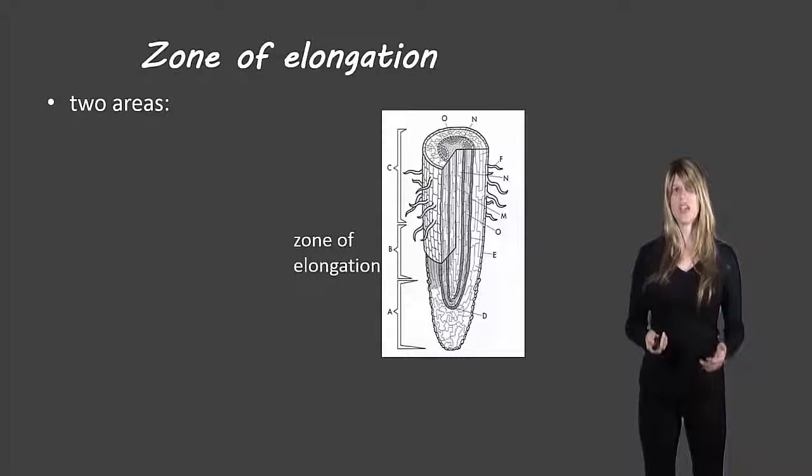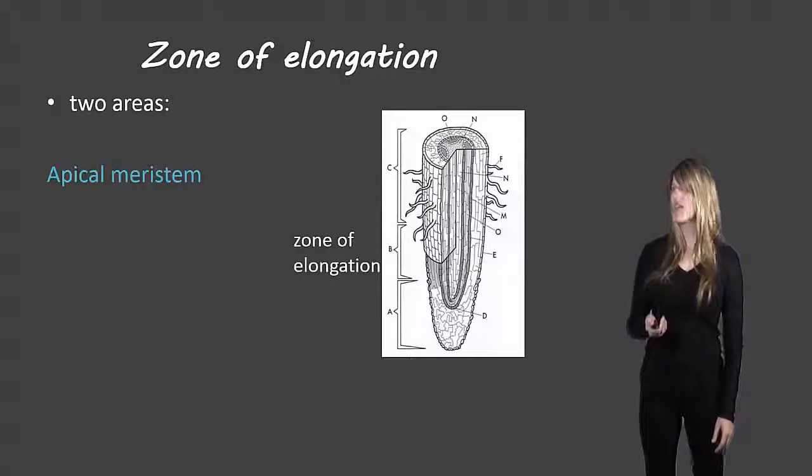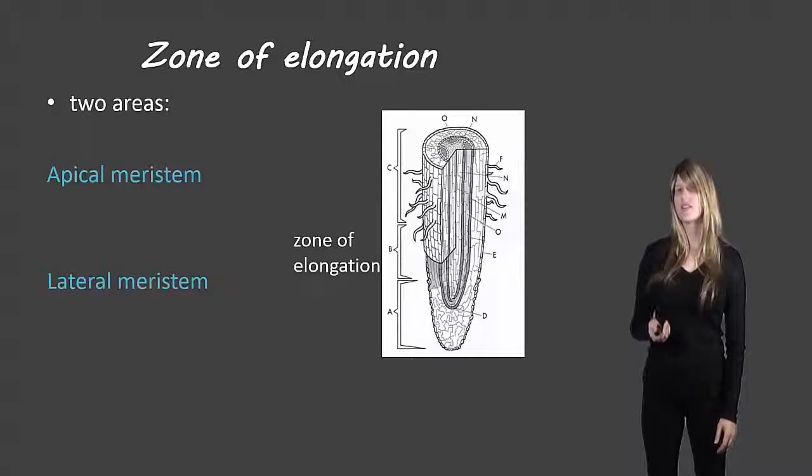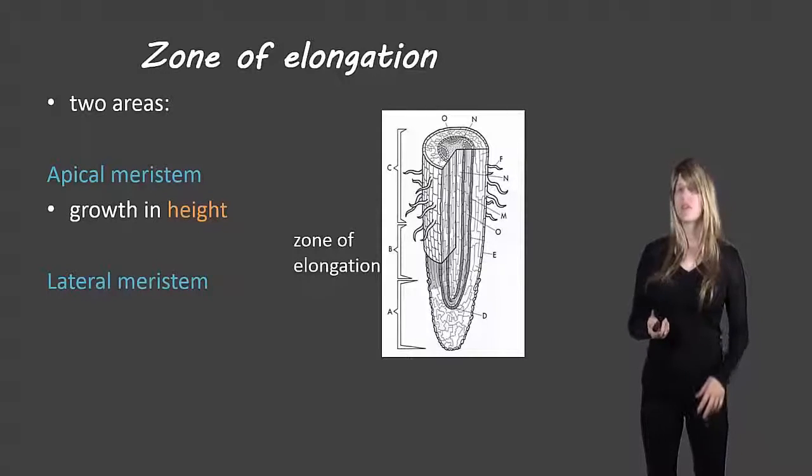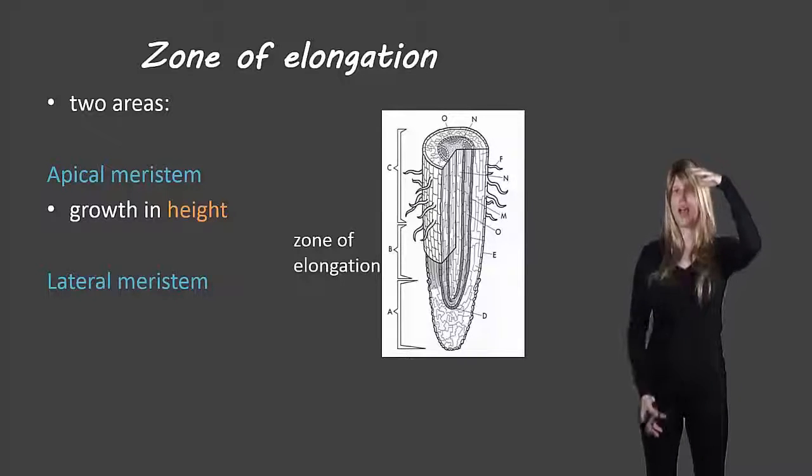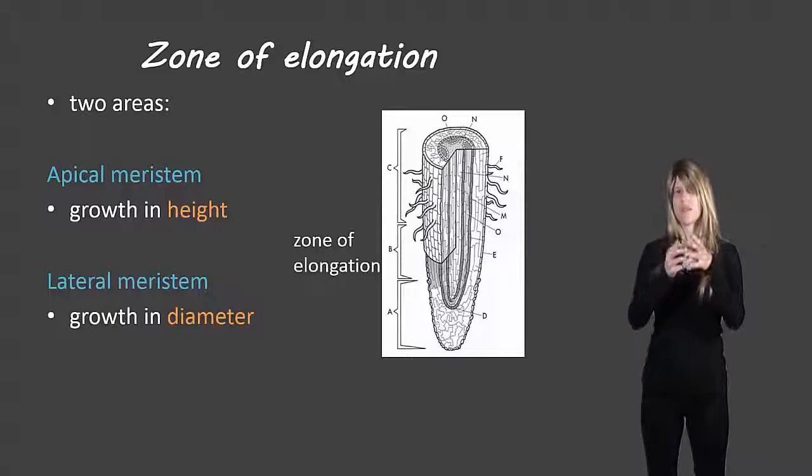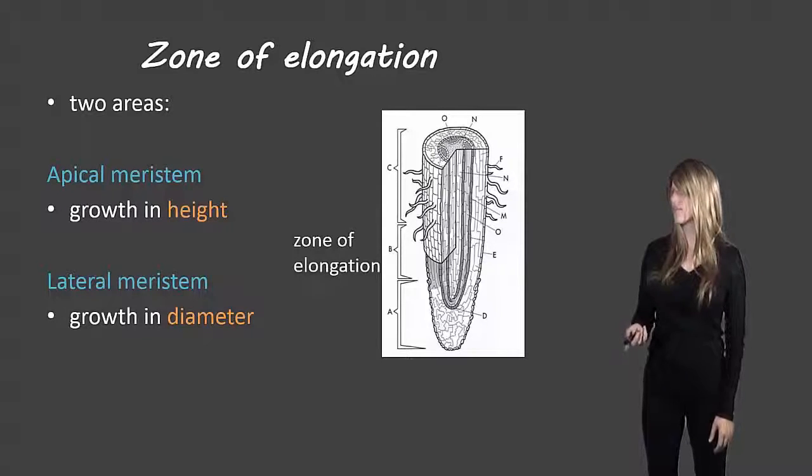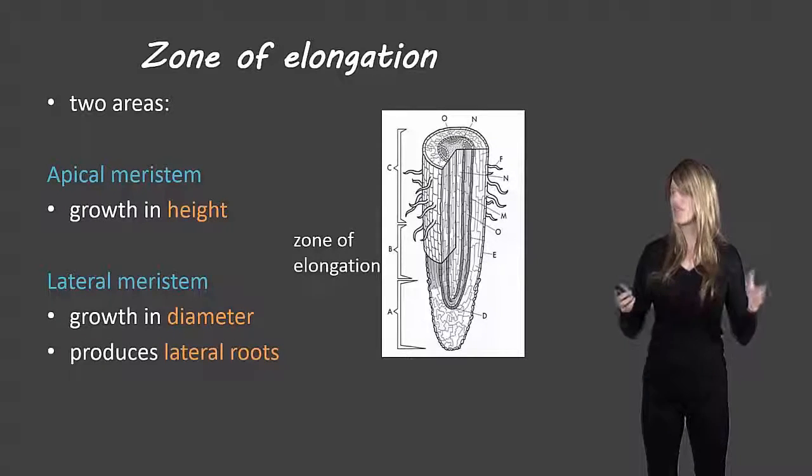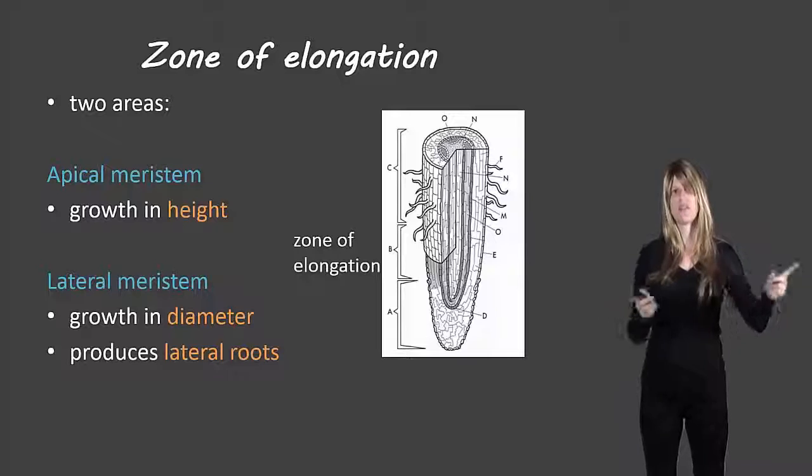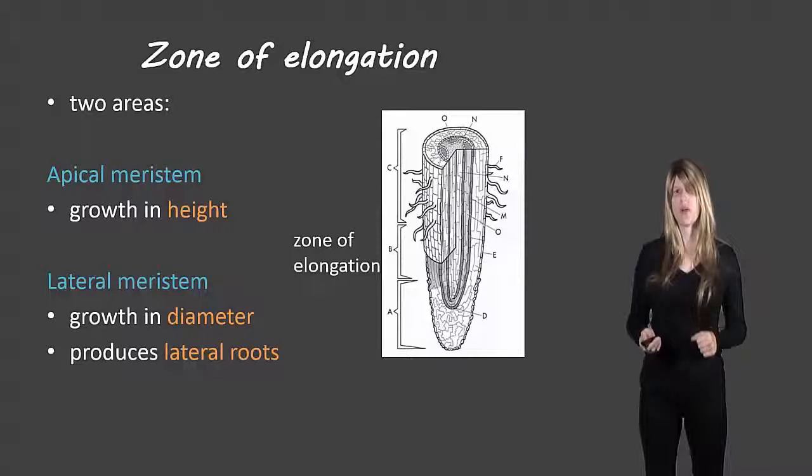The zone of elongation, the next section, has two areas. There's the apical meristem and the lateral meristem. The apical meristem is where the root grows in height and the lateral meristem is where it grows in diameter, so where it grows outwards. And the lateral meristem also produces those lateral roots that come out sideways from the primary root.